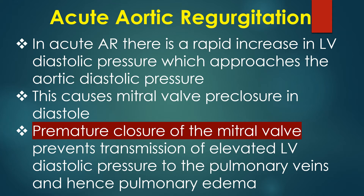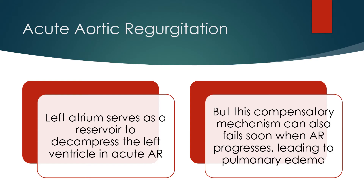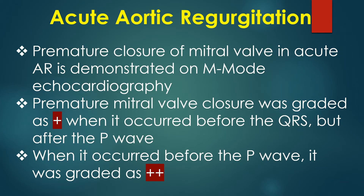The elevated LV diastolic pressure causes premature mitral valve closure in diastole. Premature closure of the mitral valve prevents transmission of elevated LV diastolic pressure to the pulmonary veins, and hence prevents pulmonary edema. However, when LV diastolic pressure rises further, this protection is lost and the mitral valve opens in late diastole, causing diastolic mitral regurgitation. The left atrium serves as a reservoir to decompress the left ventricle in acute AR, but this compensatory mechanism can also fail when AR progresses, leading to pulmonary edema.